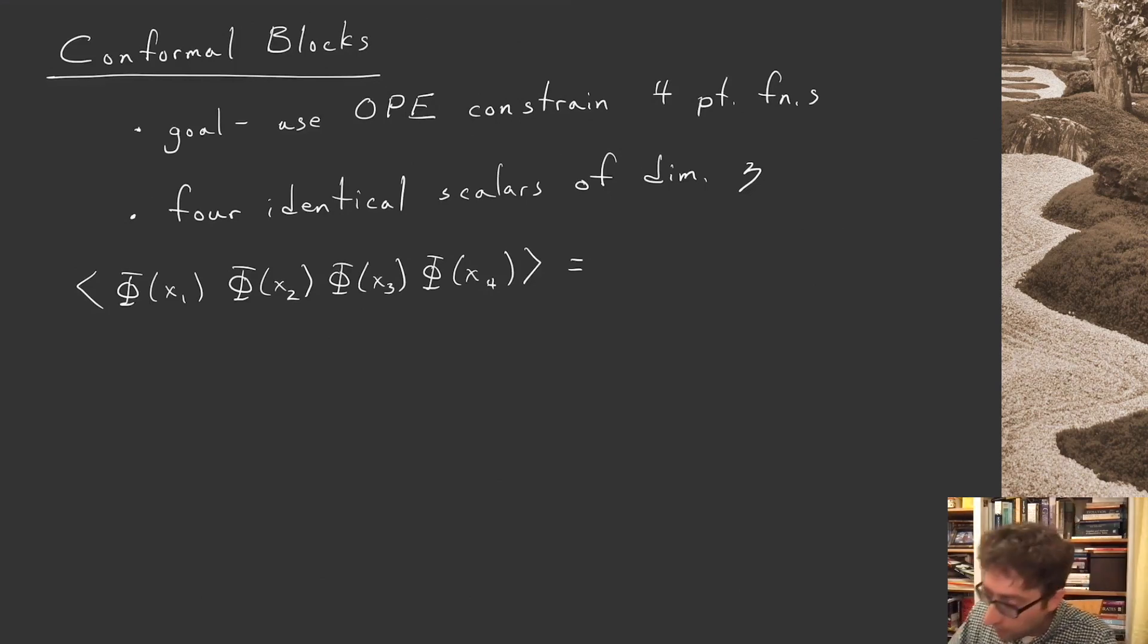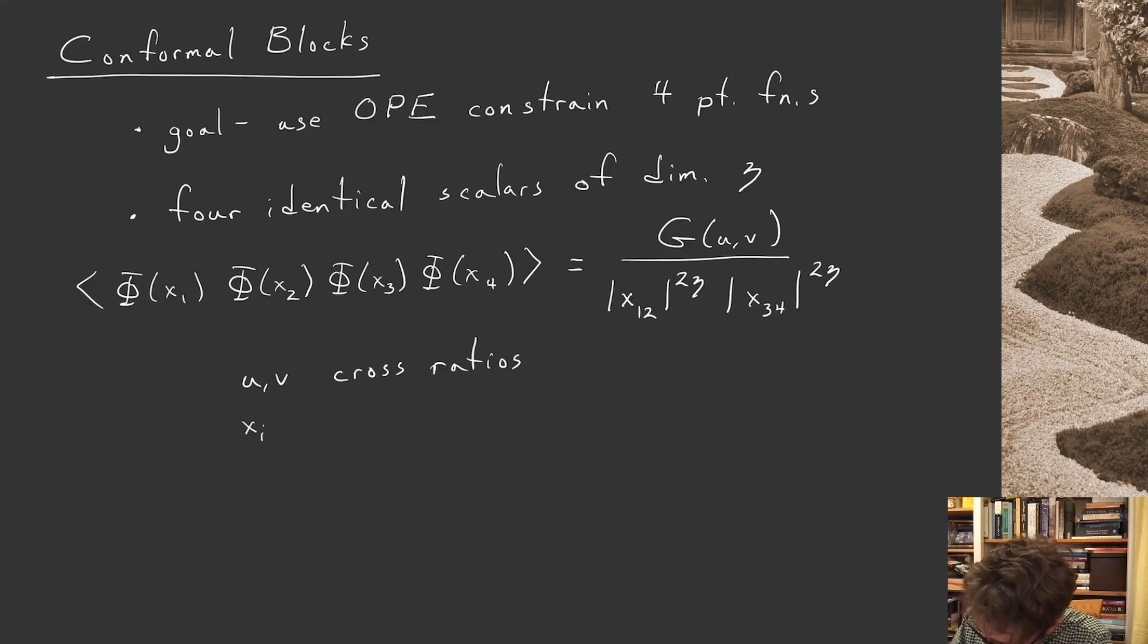We saw last week that this is fixed up to an arbitrary function of two cross ratios and some pre-factor that was fixed by conformal invariance. There's a distance between the first two points to the two eta power, distance between the second two points to the two eta power. u and v are my cross ratios and x_ij is the shorthand for the distance between the points x_i and x_j.